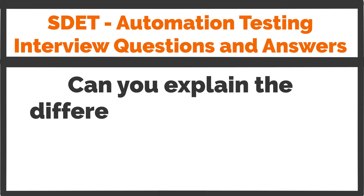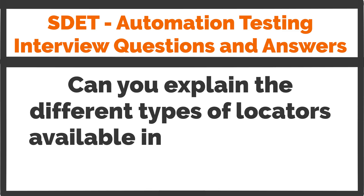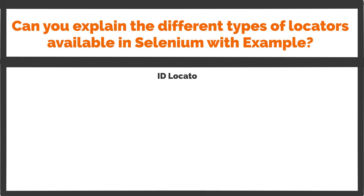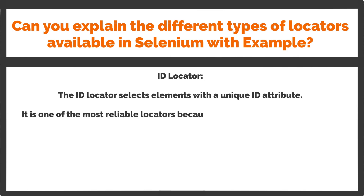Can you explain the different types of locators available in Selenium with examples? ID locator: The ID locator selects elements with a unique ID attribute. It is one of the most reliable locators because IDs should be unique for each element on a page.